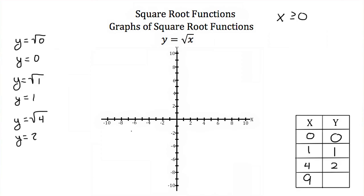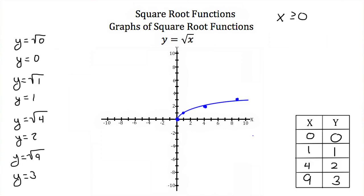Lastly, I plug in 9: y equals the square root of 9, and 9 is a perfect square of 3, so y equals 3. Now I'm going to plot these points: (0,0), (1,1), (4,2), and (9,3). I connect these with a smooth curve, and the graph of the square root of x looks something like this.